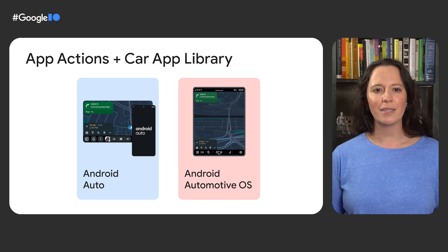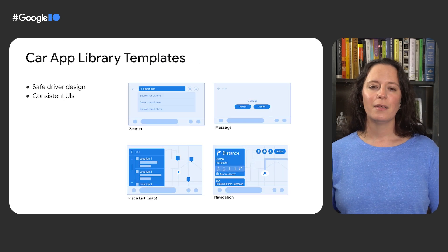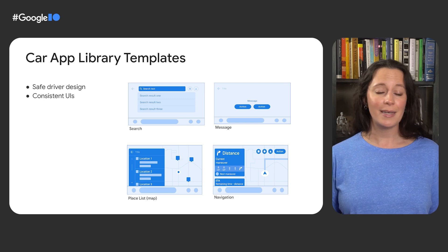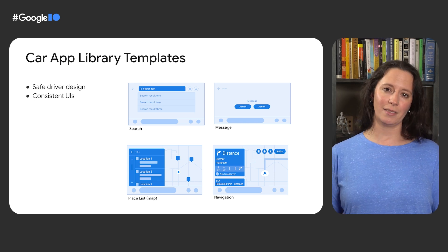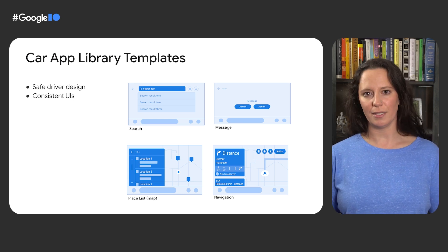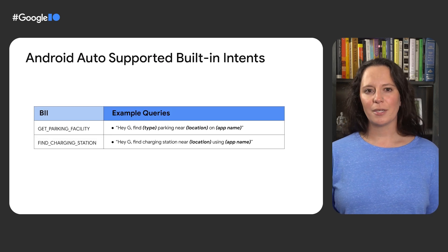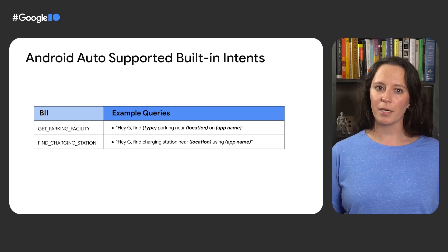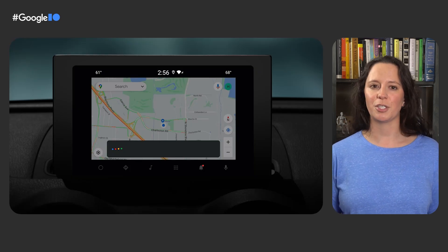The car app library provides templates that can be used to build parking, charging, and navigation apps. These templates are designed with driver safety in mind, minimizing distractions with glanceable, voice-forward UIs that adapt to the vehicle they're running in. At this time, App Actions on Auto supports BIIs relevant to on-the-go use cases — finding parking and charging. Let's take a look at how those BIIs work with our partner PlugShare, which allows users to find charging stations on the go. Here's a demo of the Android Automotive OS user experience where the user says, 'Hey Google, find charging stations nearby on PlugShare.'